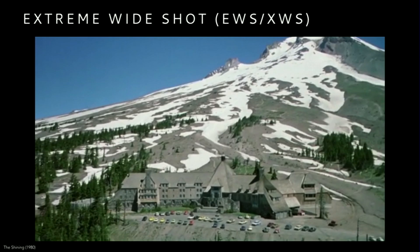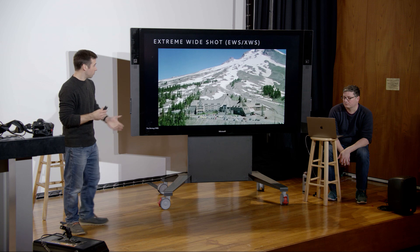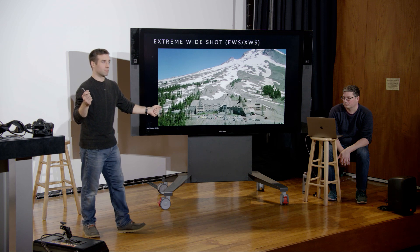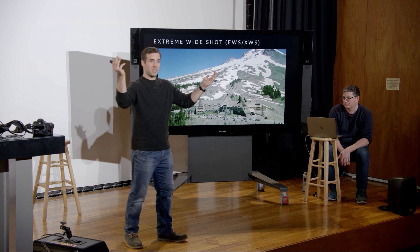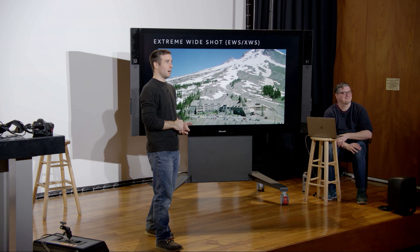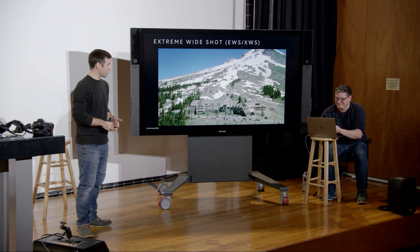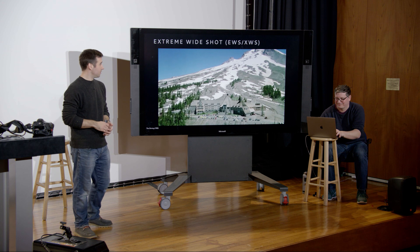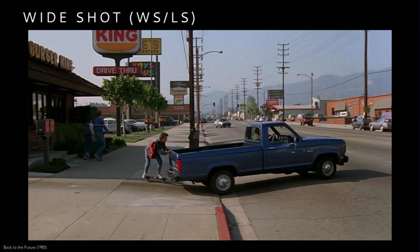The extreme wide shot (EWS or XWS) gives you a very big sense of scale and a sense of place. If you're establishing a location, this might be your choice because you get so much information in the frame. Working in from there, a wide shot is also handy to establish a scene — you get more detail while still getting a lot of information and a broad sense of the environment.